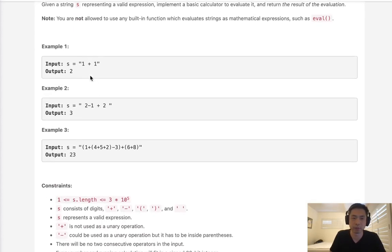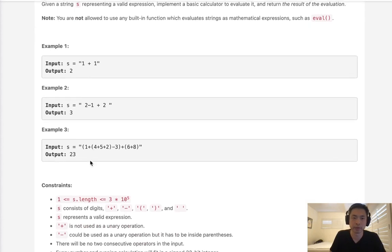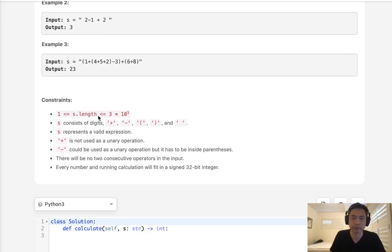If we're given a string like 1 plus 1, we want to return 2. If we're given a string like this, we want to calculate everything and return 23. They give you a couple of constraints. You can see the string could be pretty large. We probably want to do this in O of N. Strings can consist of digits, plus, minus, parentheses, or white space.